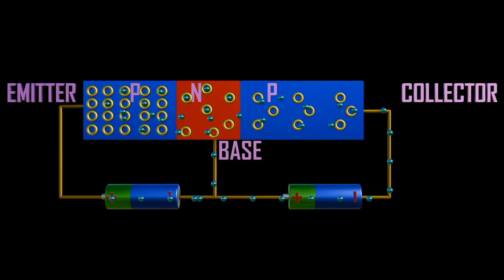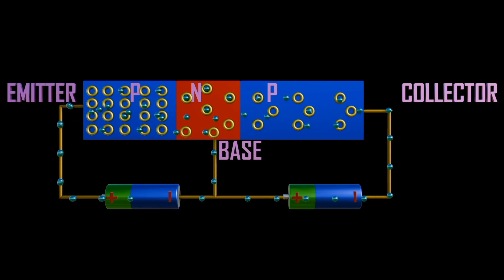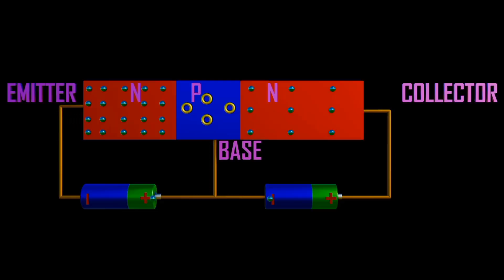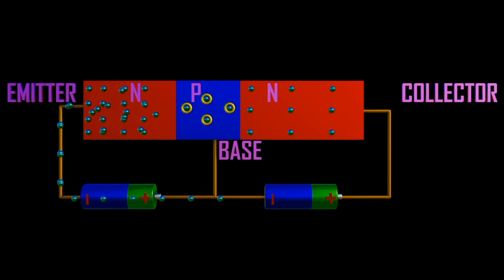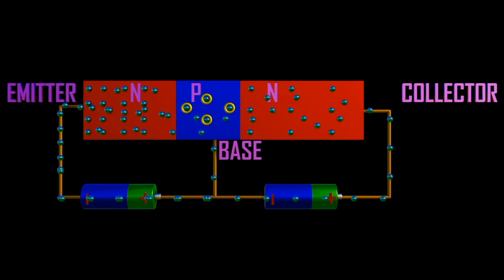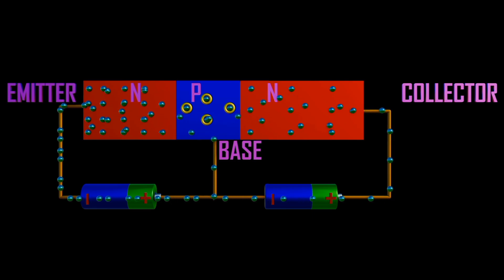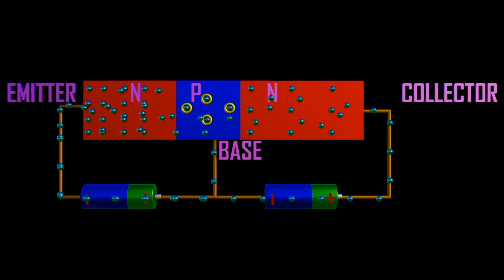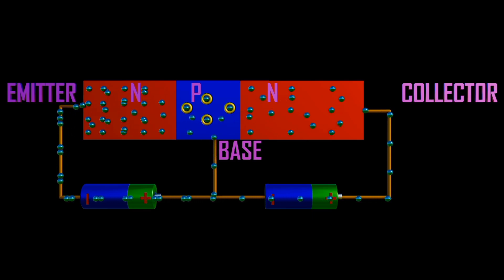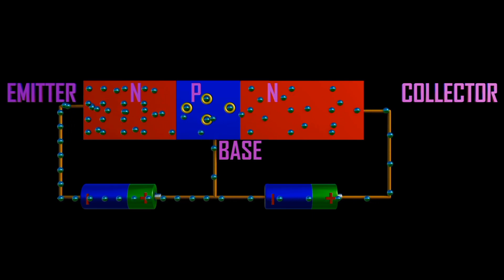Base is a narrow region sandwiched between the larger collector and emitter regions. Emitter is heavily doped and emits electrons or holes into the base of the transistor. Base is very thin and is lightly doped. Collector region is moderately doped and is the largest of all three regions.